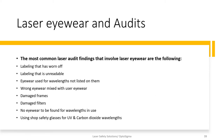The most common findings in laser audits usually center on eyewear, partly because auditors may not fully understand your laser system but can certainly look at a pair of eyewear and tell whether it is labeled. Common findings include: labeling worn off or unreadable, eyewear used for wavelengths not listed on it — which goes back to getting documentation from the manufacturer — and wrong eyewear mixed in with the user's eyewear.